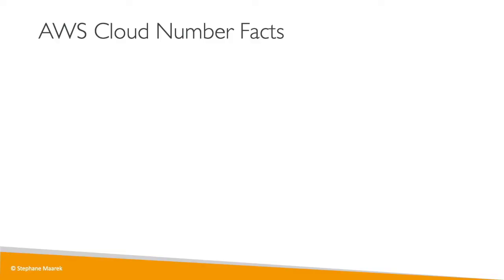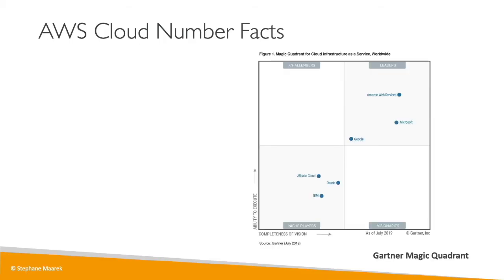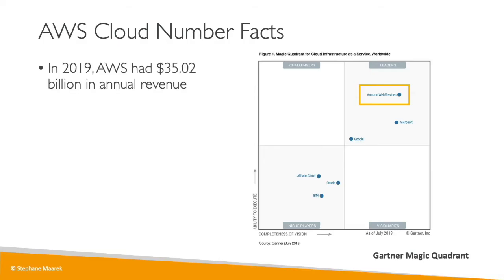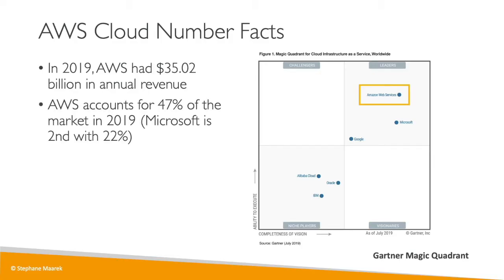Now let's look at where AWS is today. If we look at the Gartner Magic Quadrant, which ranks cloud providers, AWS is in the top right corner — the leader quadrant. It executes really well and has great completeness of vision. It is followed closely by Microsoft and Google. Still, in 2019 AWS had 35 billion dollars in annual revenue, which is huge.